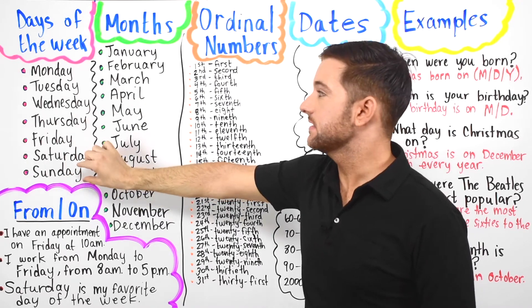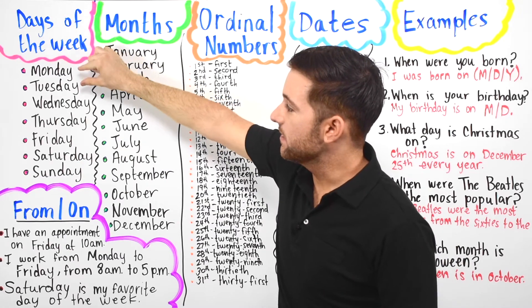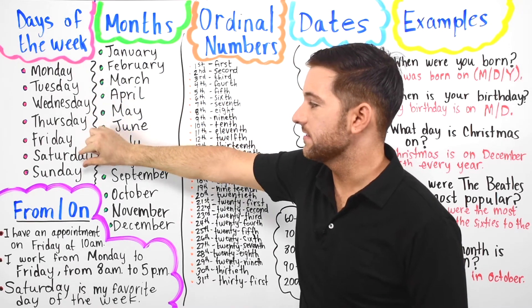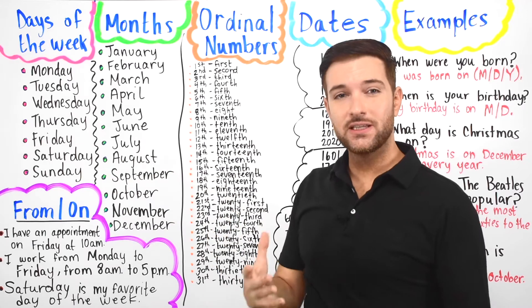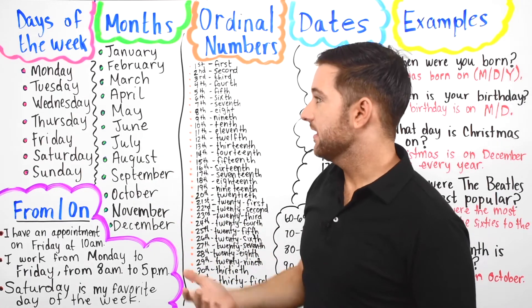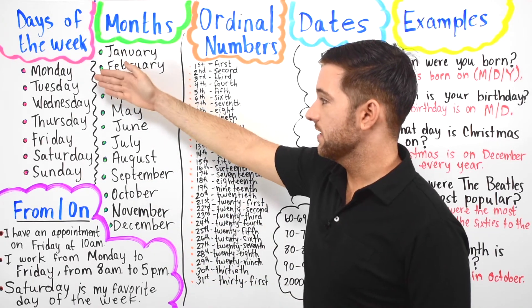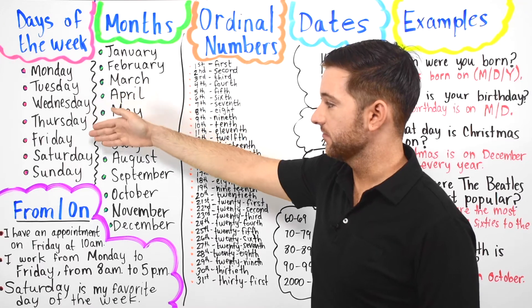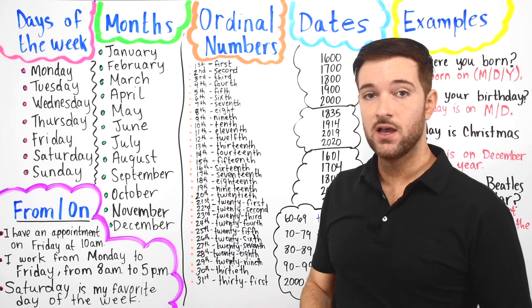So you'll see Sunday up at the top. It goes Sunday, Monday, Tuesday, Wednesday, Thursday, Friday, Saturday. But normally Americans say it like this: Monday, Tuesday, Wednesday, Thursday, Friday, Saturday, and Sunday.